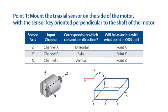When collecting the data, you'll install the triax sensor at the first point in the horizontal radial direction with the sensor key perpendicular to the shaft of the motor. Now the Z axis of the sensor will be channel A, and since it corresponds to the conventional horizontal direction, the data will be associated with point X in the ODS.